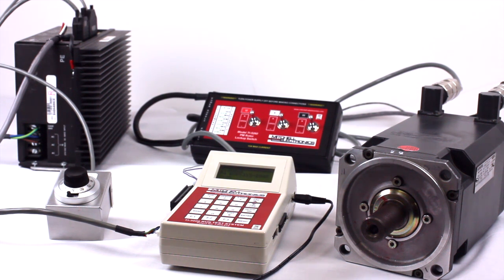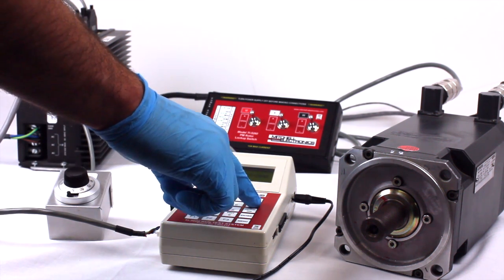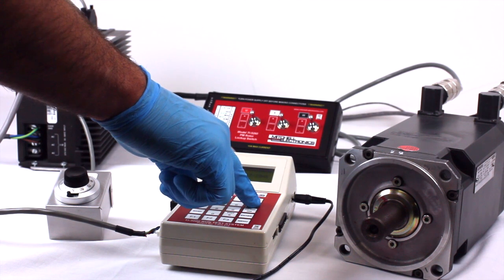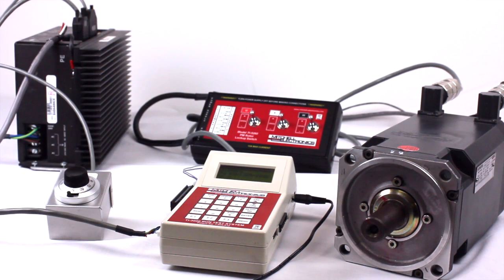Then, select the correct feedback type and number of poles using the Feedback Selection button. This is a 6-pole motor with a Heidenhain EQN1325-2048 encoder.